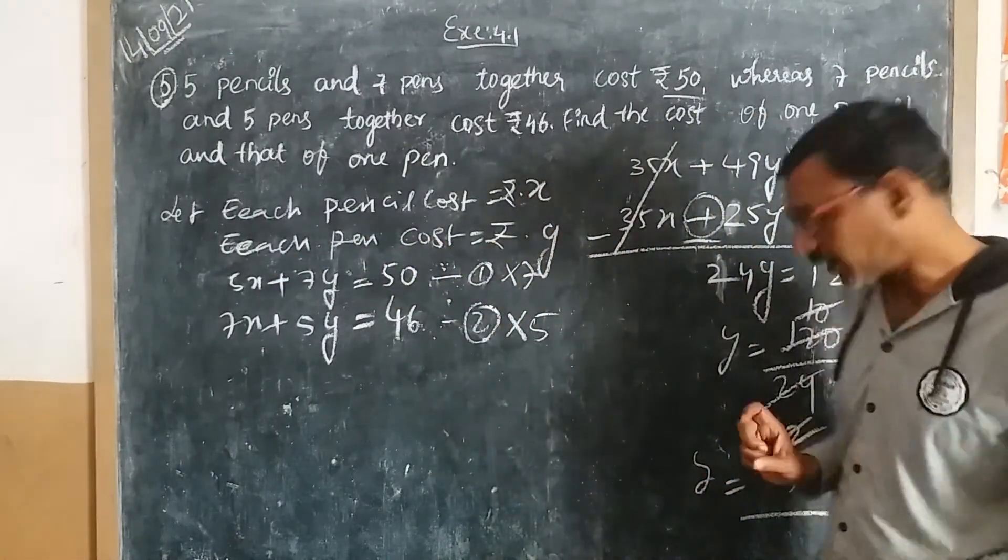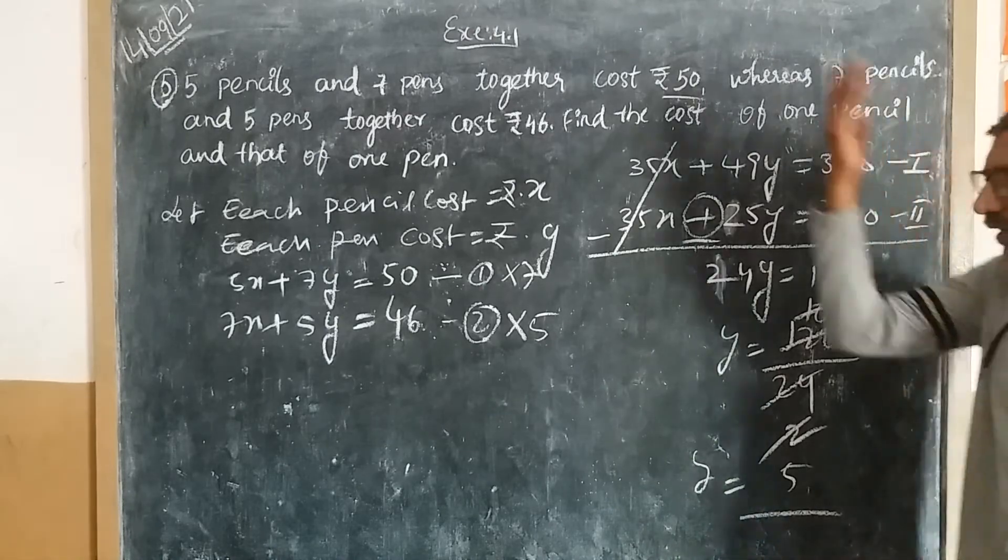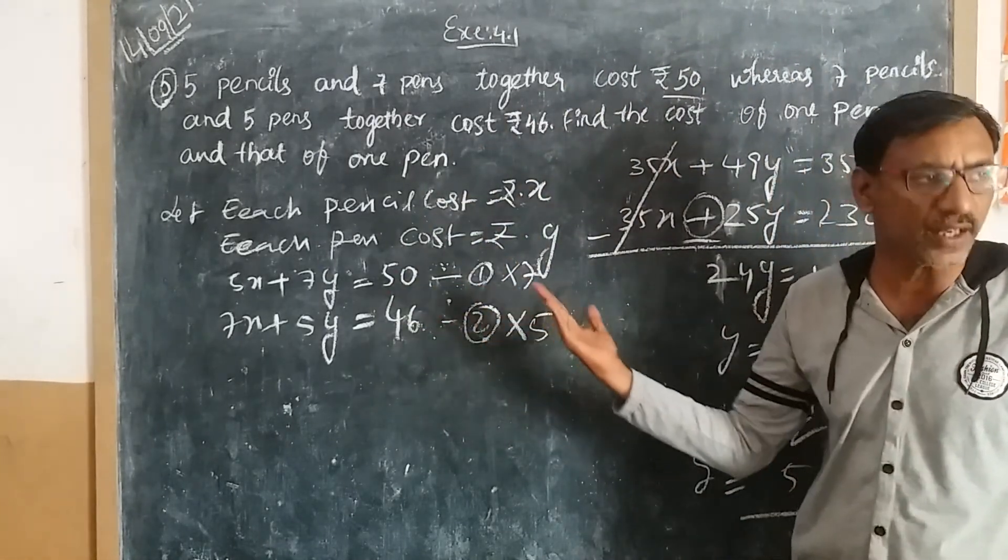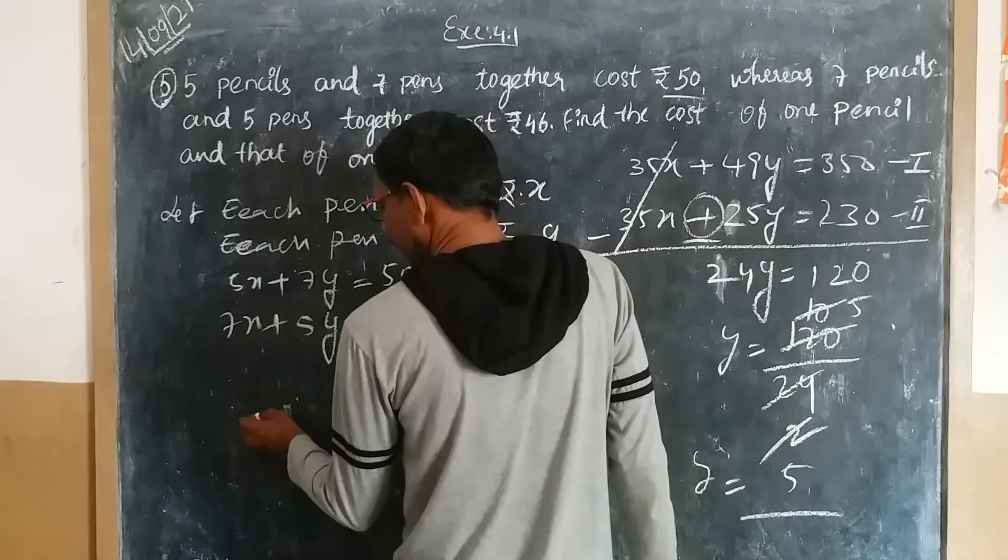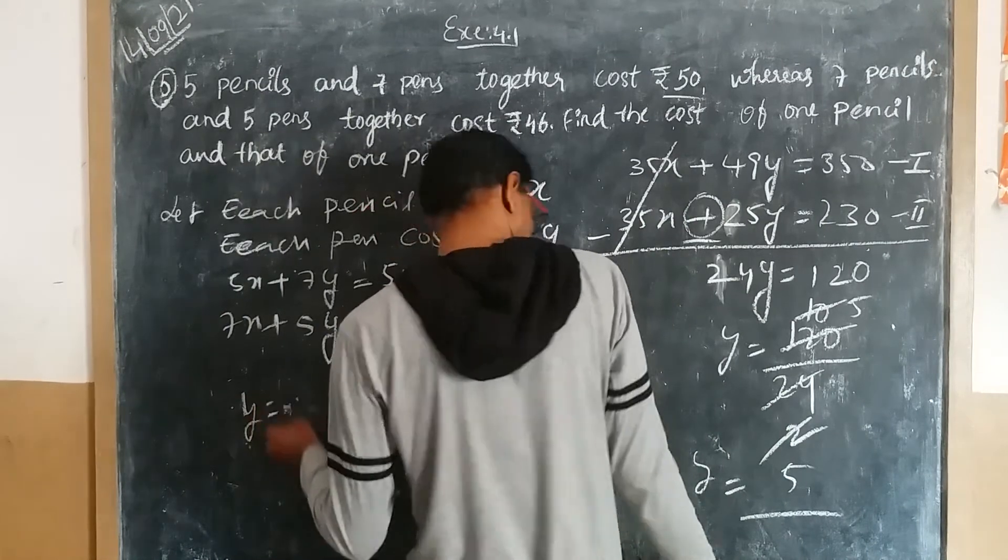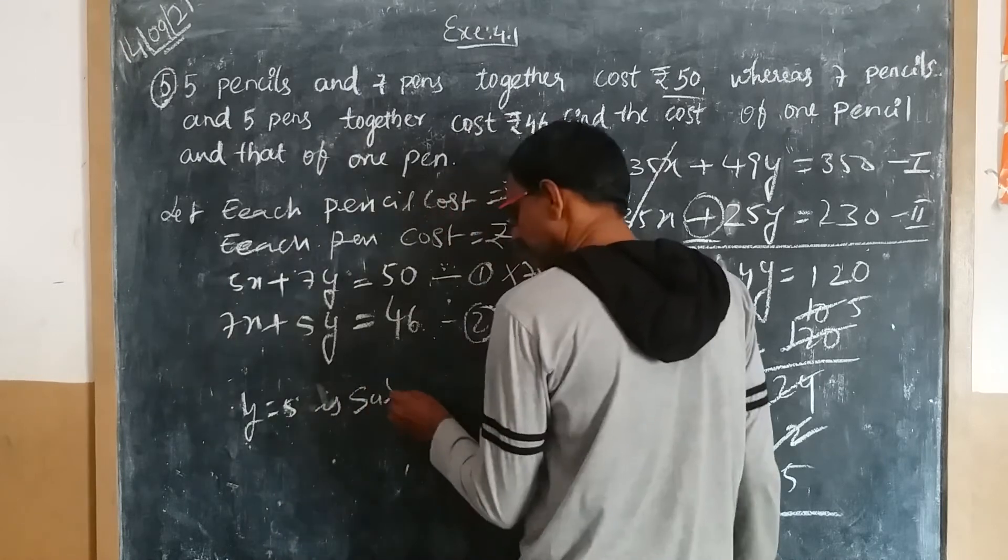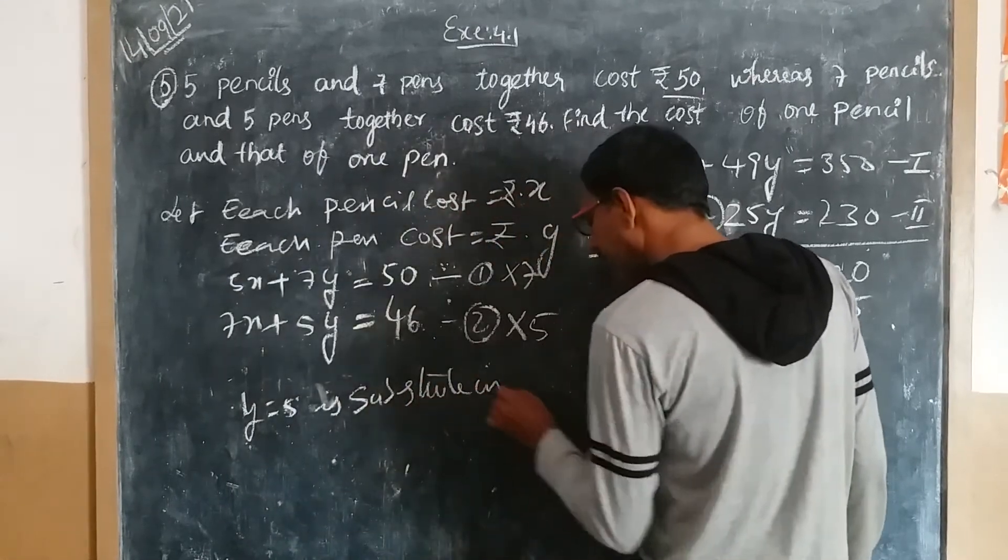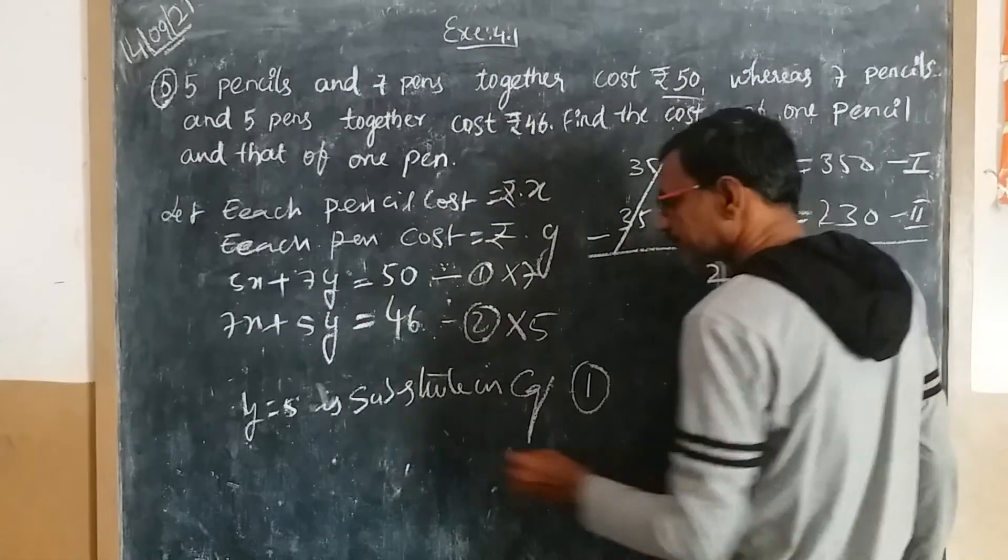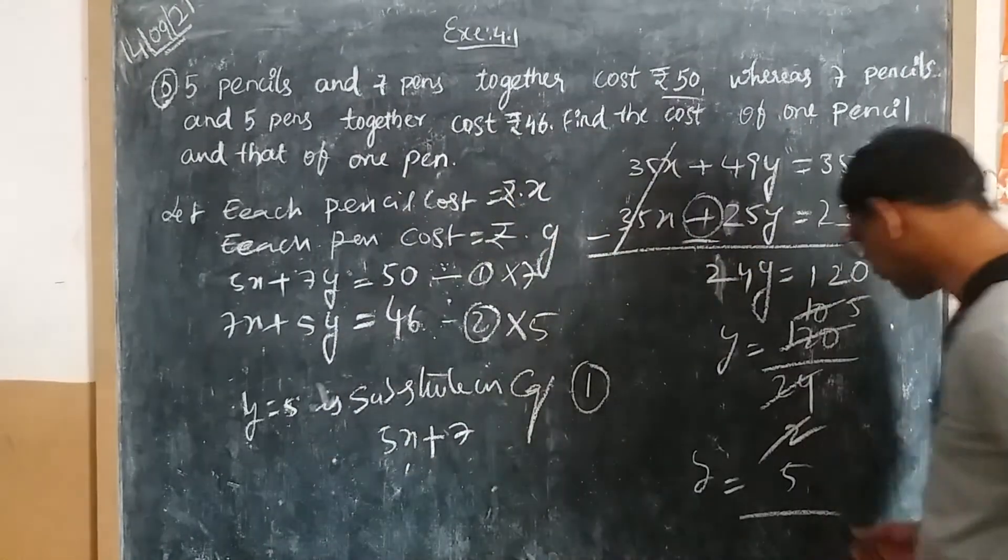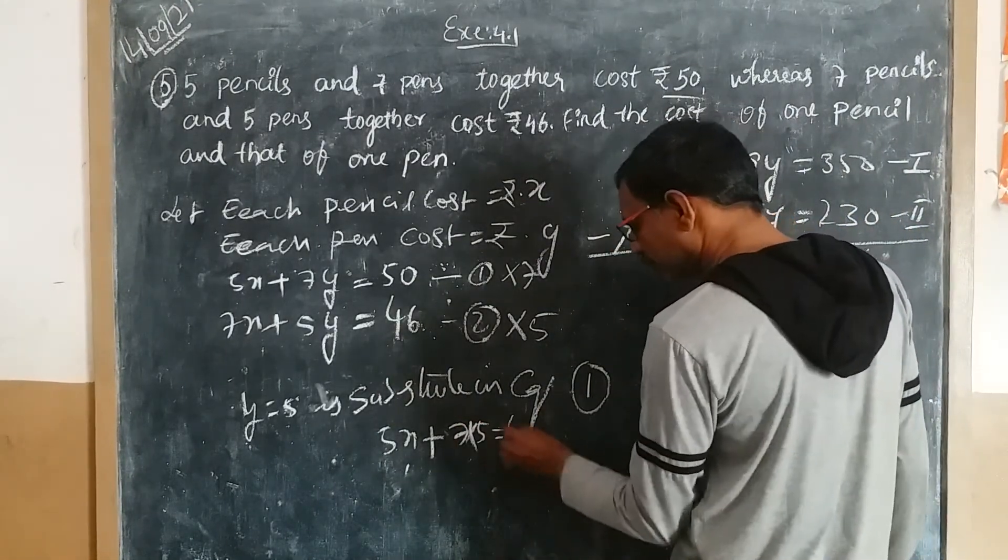Each pen costs 5 rupees. Now take the y value and substitute it in the first equation to get x. So y equals 5. Substitute in equation one: 5x plus 7 times 5.